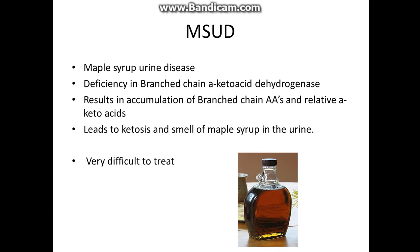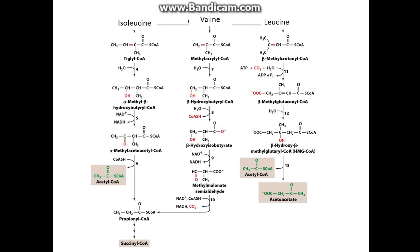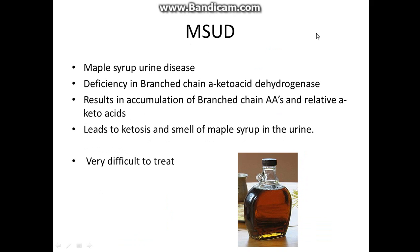The other condition I mentioned was MSUD — maple syrup urine disease. It's caused by a deficiency in branched-chain alpha-keto acid dehydrogenase, which results in branched-chain amino acids and their relative keto acids accumulating. The affected amino acids are isoleucine, valine, and leucine. The increase leads to ketosis and a maple syrup smell in the urine.